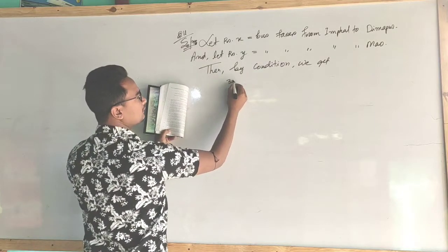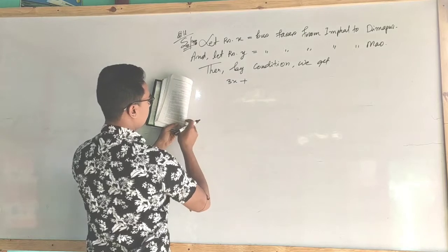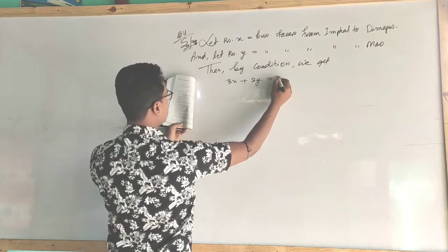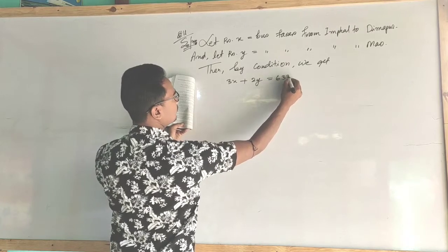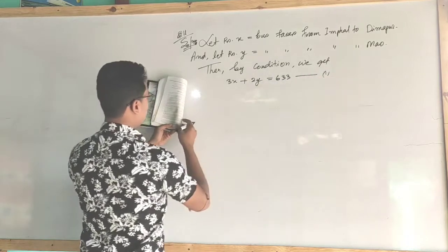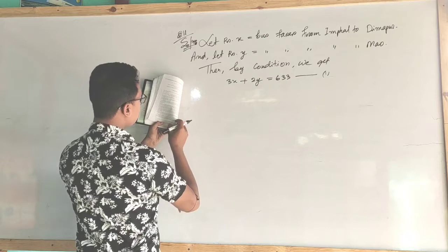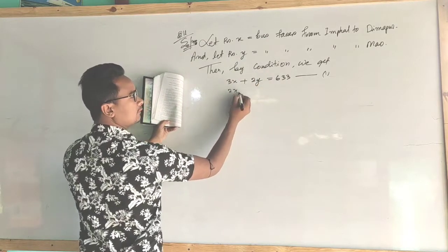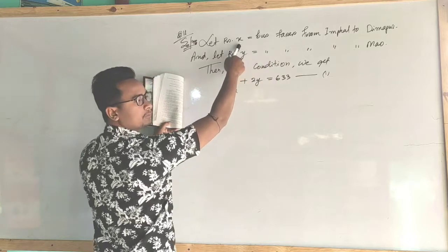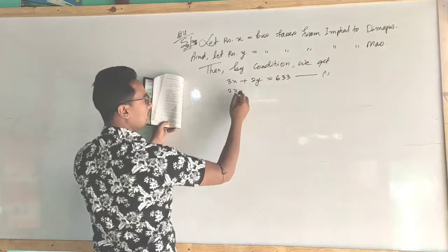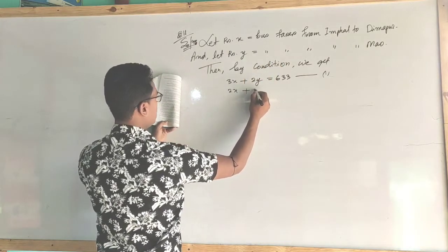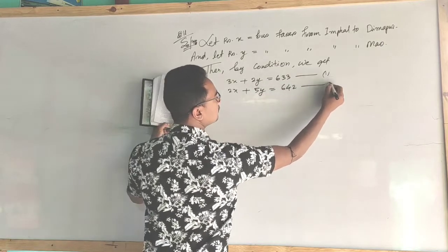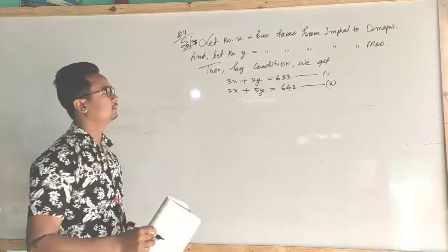So you have 3x plus 2 tickets from Imphal to Dimapur equals 633. This is equation number 1. And 2x plus tickets from Imphal to Dimapur equals 642. This is equation number 2.